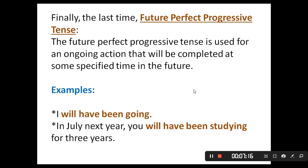Finally, the last type is the future perfect progressive tense. The future perfect progressive tense is used for an ongoing action that will be completed at some specified time in the future.